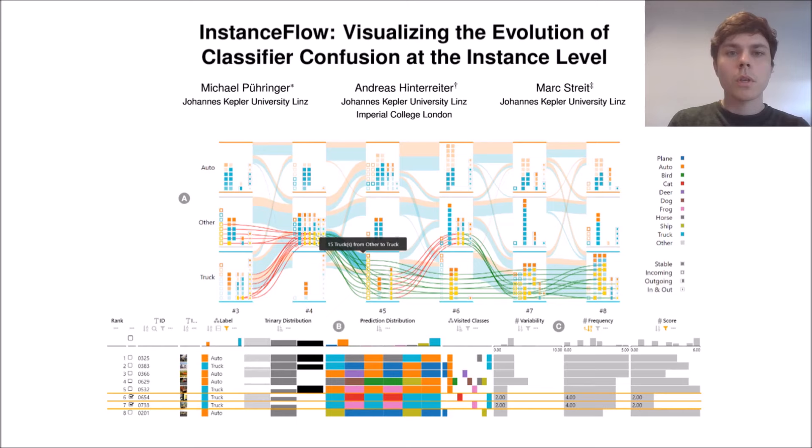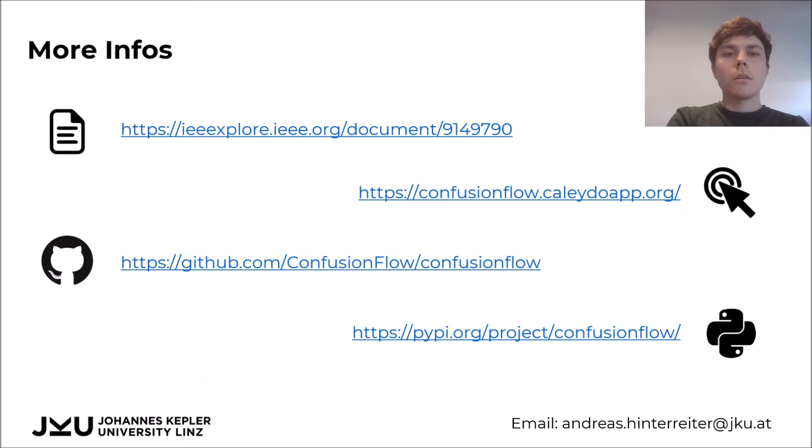If you would like to find out more about Confusion Flow, a preprint of our TVCG paper is already available online. You can also try out a prototype implementation yourself by visiting confusionflow.keledoapp.org. Confusion Flow is open source and you can find the source code on GitHub. It's also pip installable, which should make it very easy to try Confusion Flow on your own data. Thank you for listening.